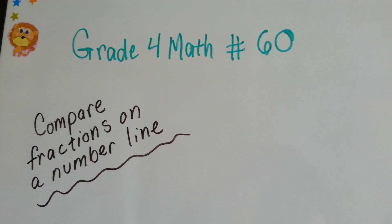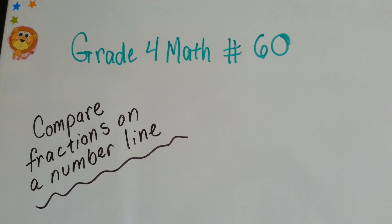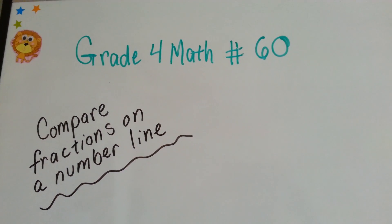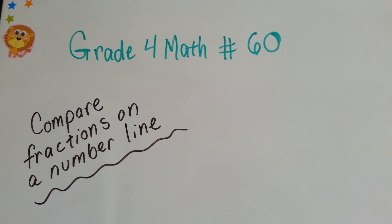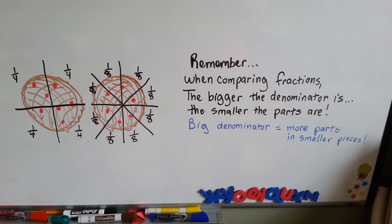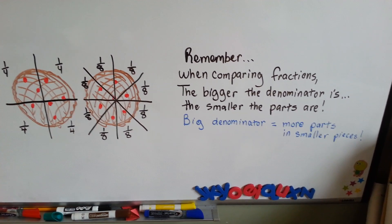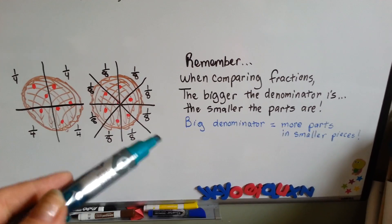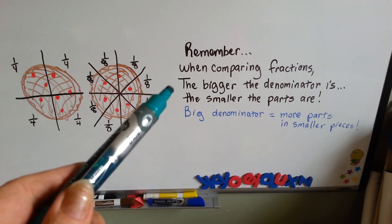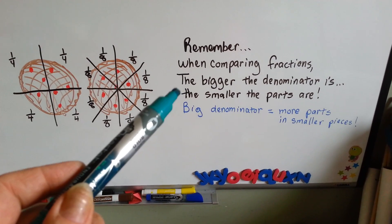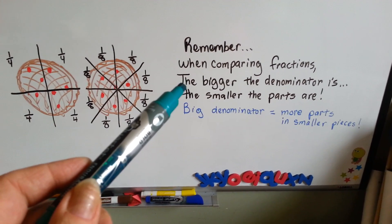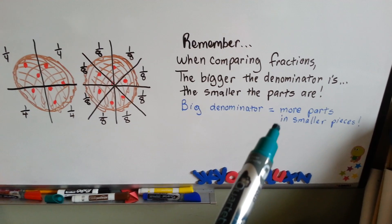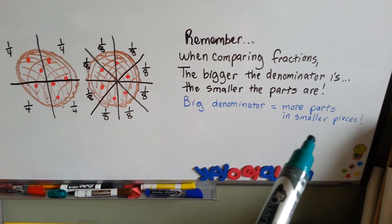Grade 4 math number 60: Compare fractions on a number line. In our last video, we talked about comparing fractions and looking at the denominator. Remember when comparing fractions: the bigger the denominator is, the smaller the parts are. Big denominator equals more parts in smaller pieces.